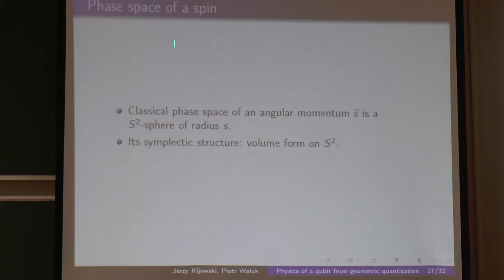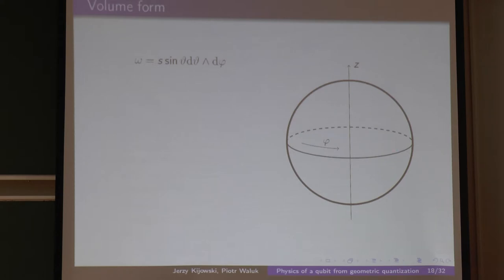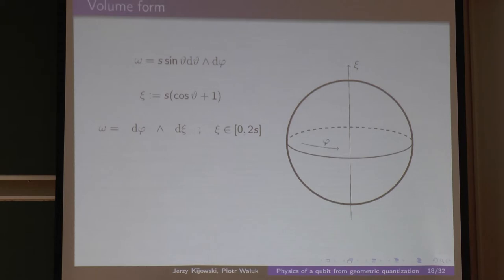Consider the phase space of a spin: it is just S², the two-sphere. Its symplectic structure is just the volume form. When we introduce the variables phi and xi, the symplectic form becomes d phi d xi. At first glance it is like mechanics: phi is position, xi is momentum — except that xi does not cover the entire line but only an interval, and phi has to be periodic.